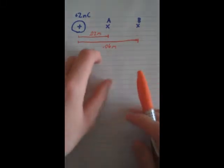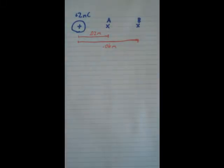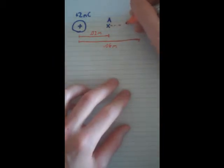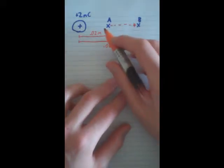Say we have a problem like this, and we want to find the electric potential from A to B. So, from here to here, essentially.